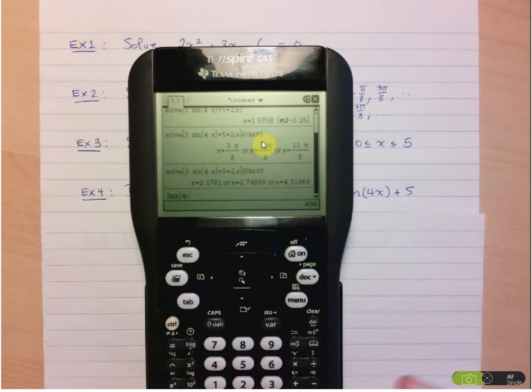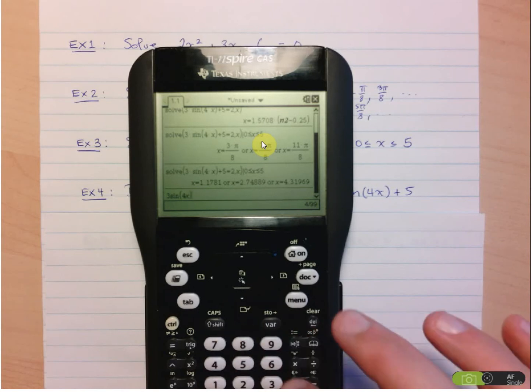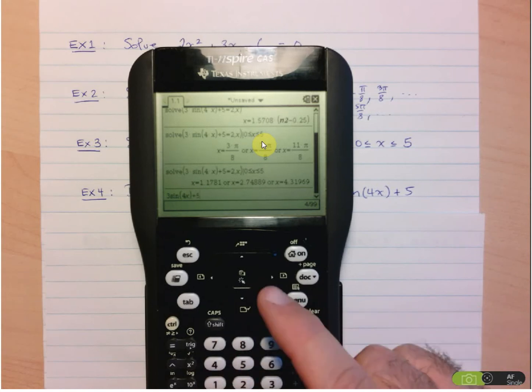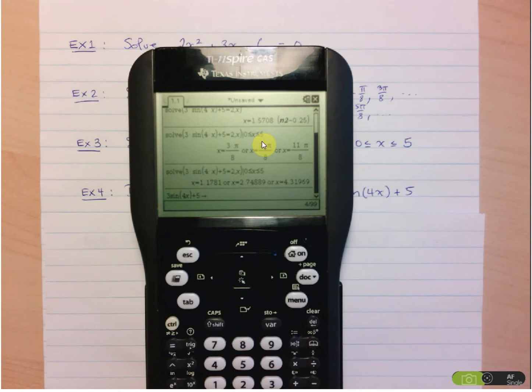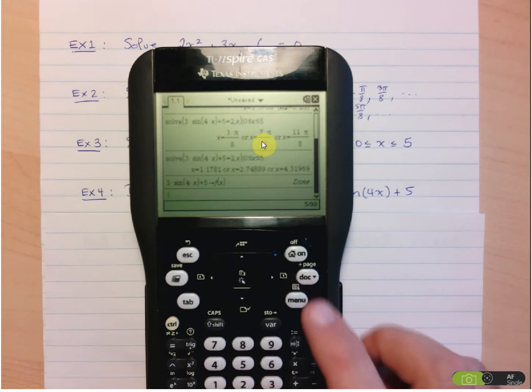And the way you define a function is you just write out its equation. So 3 sine 4X plus 5. Now again, I could have copied and pasted and erased what I didn't need. And what you use is the store button, which if you see here, just above the variable button, so control var. And we're going to store this as the function F at X. And once you see done, it's done.